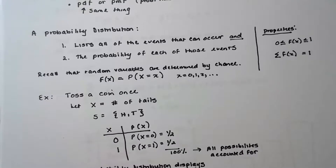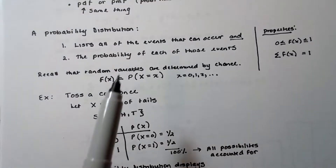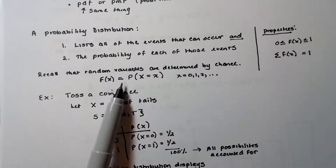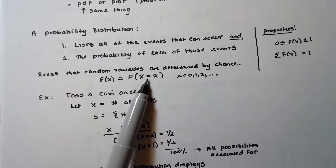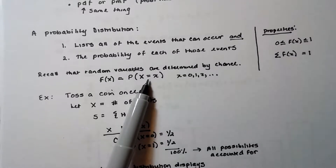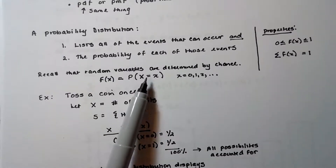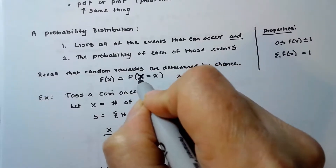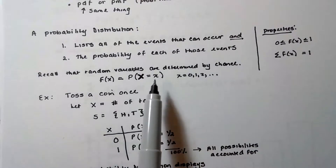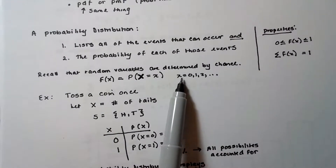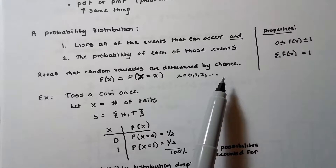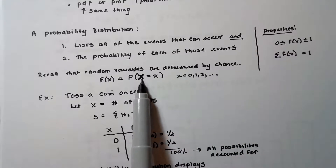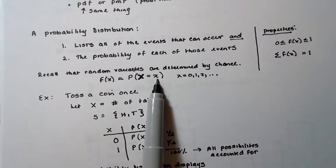Random variables are determined by chance — that's why they're random. This function is defined as the probability that X equals x, where the capital X is the random variable and lowercase x is the specific value it takes on — zero, one, two, whatever it happens to be. So this is the probability that the random variable X takes on a certain value x.